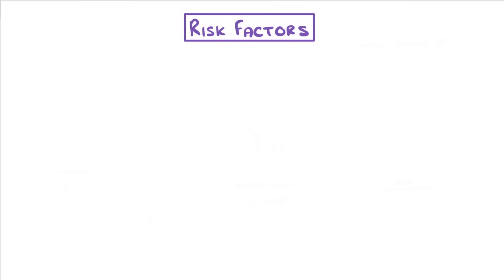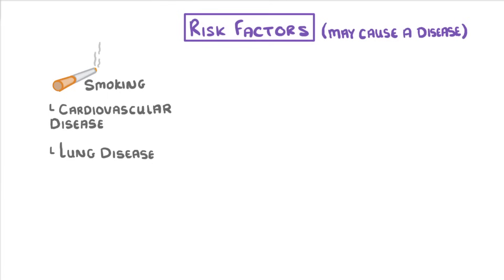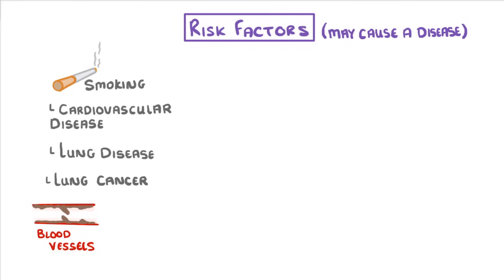In other cases, certain risk factors might directly cause a disease. For example, smoking has been proven to directly cause cardiovascular disease, lung disease and lung cancer. We know this because the toxins in smoke can directly damage the walls of our blood vessels and the cells that line our lungs.